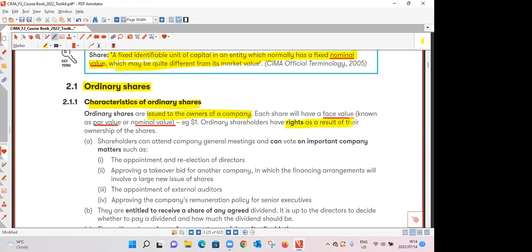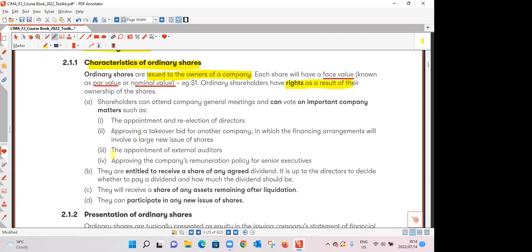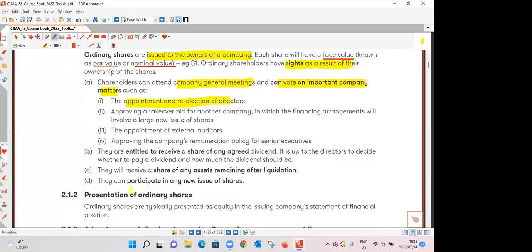What are those rights or entitlements? Right number one is for shareholders to attend the company general meetings and when they do so they can vote on important company matters such as the appointment and re-election of directors. They can approve some takeover bids, they can appoint external auditors and they also approve the remuneration policy for senior executives. For those who have done corporate governance you would have a clear picture of these rights.